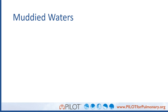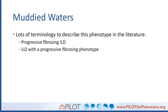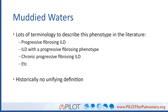This has been an area where historically there's been a lot of different terminology to describe this clinical phenotype in the literature. People have used the terms progressive fibrosing ILDs, ILDs with a progressive fibrosing phenotype, and chronic progressing fibrosing ILDs, among others. Historically, there has been no unifying definition, and in clinical trials, various criteria have been used to describe this phenomenon of progressive fibrosing ILD.